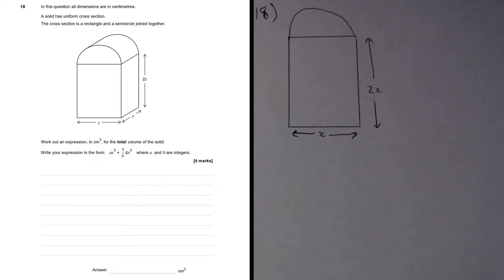Notice that this is a prism, so it has a uniform cross section, and the area of a prism is always the area of the cross section times its length.